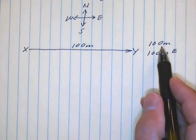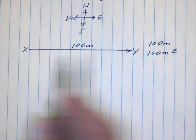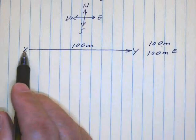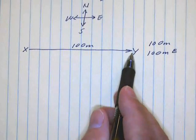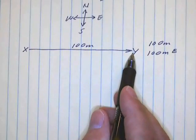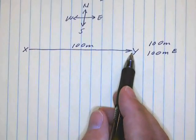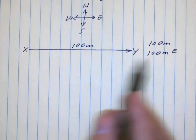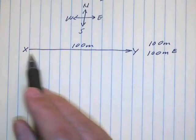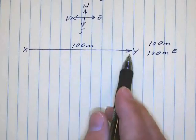So in this case, the distance that we traveled from X to Y was 100 meters, yet the displacement was 100 meters east.